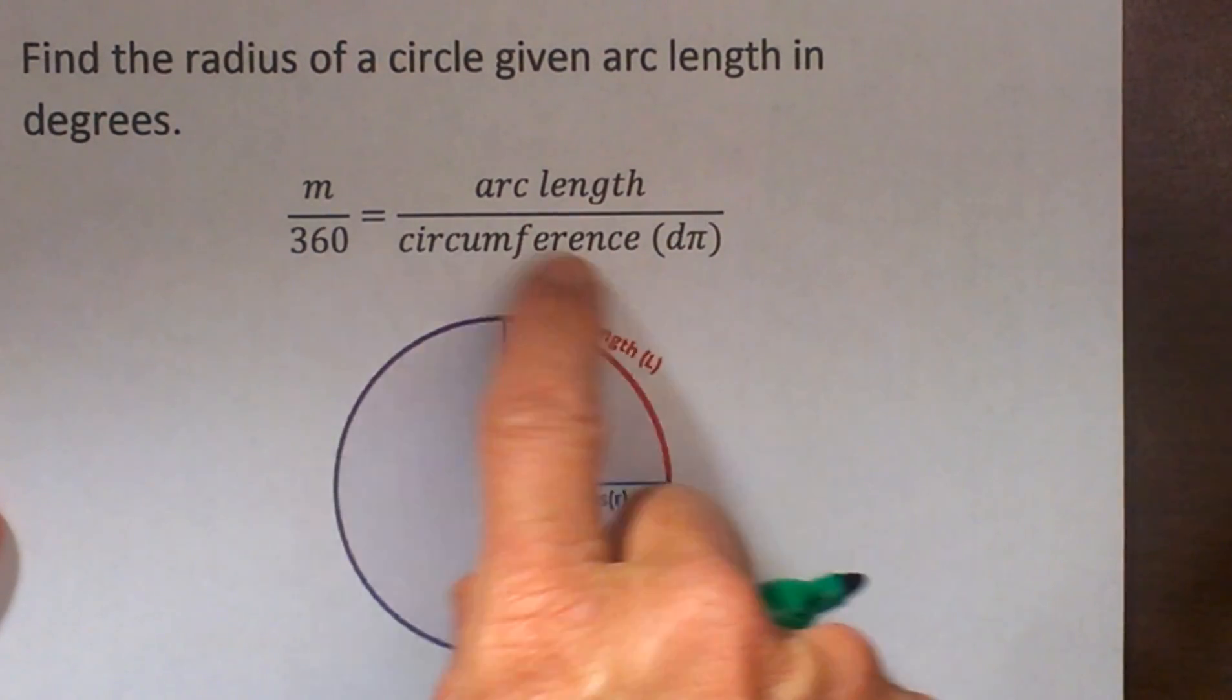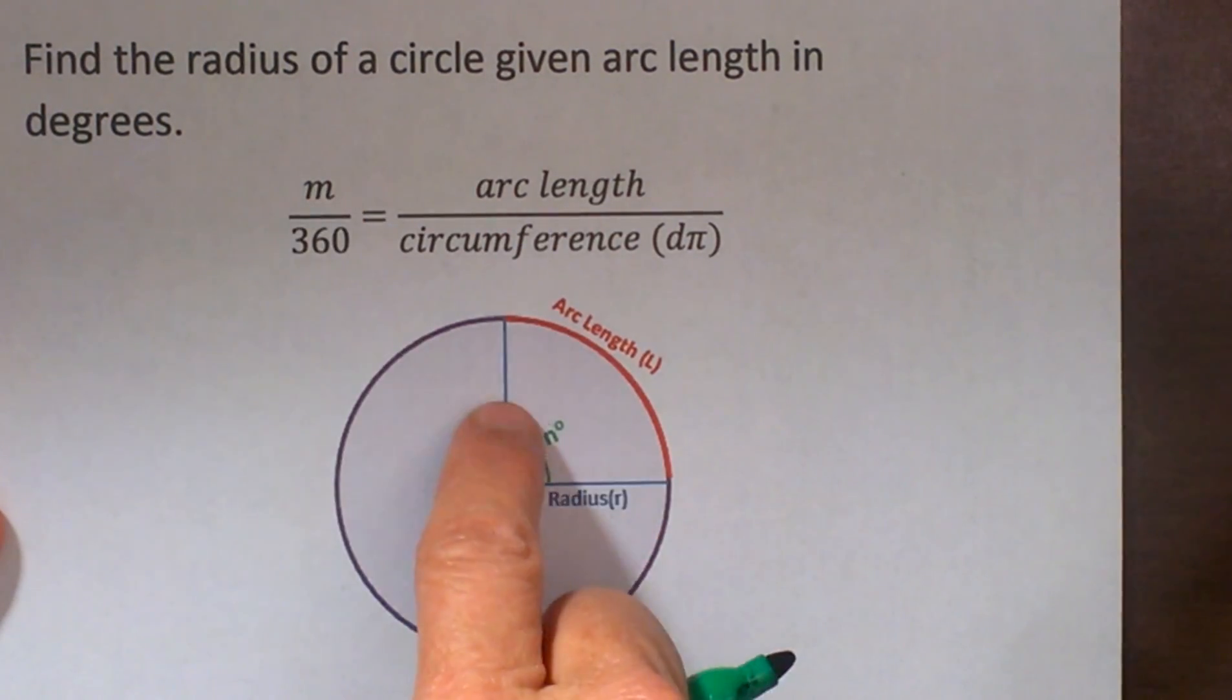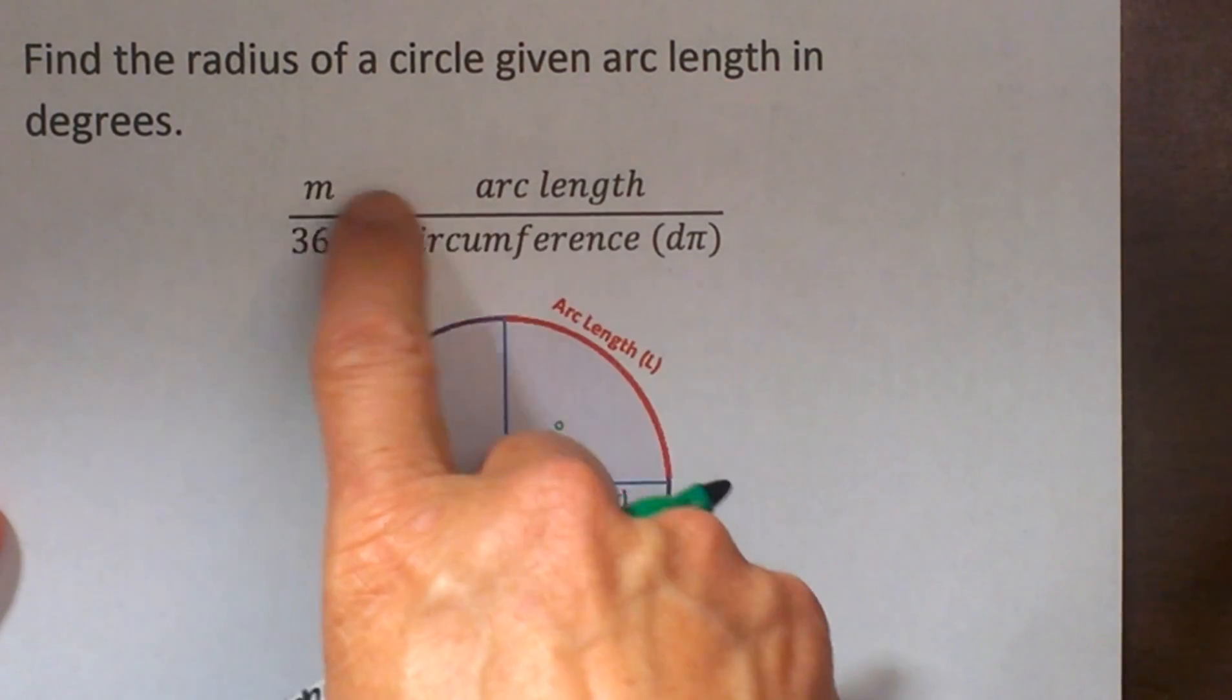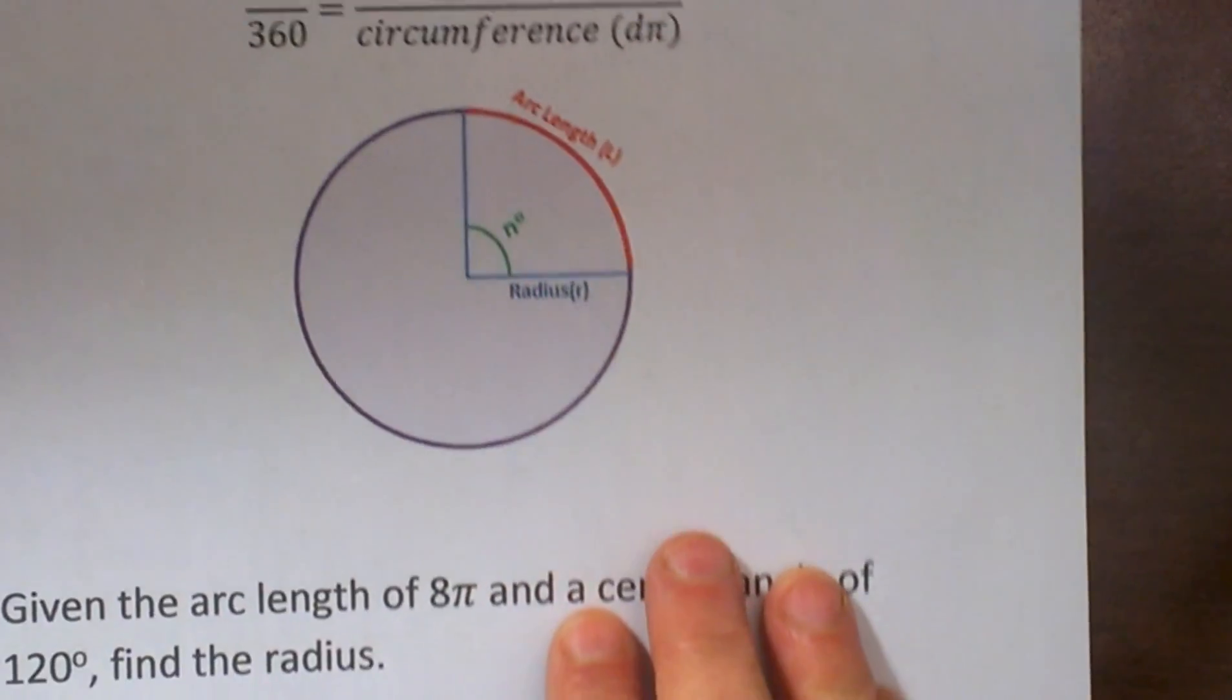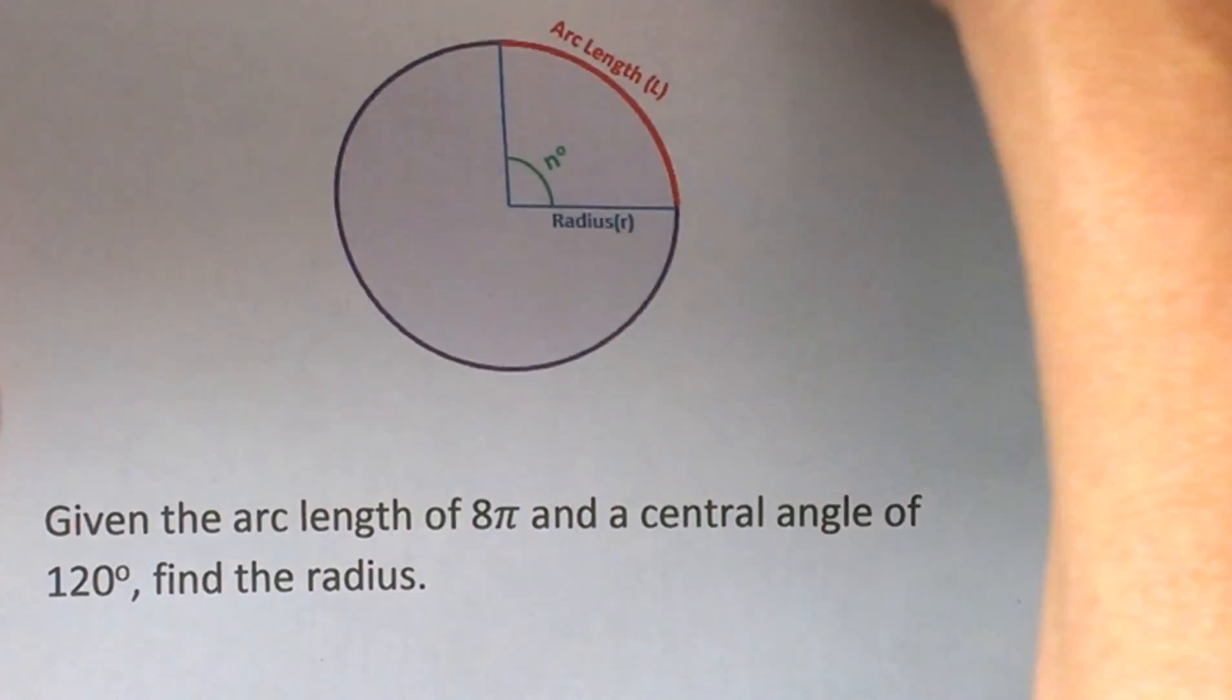So 360 is the entire circumference and this fraction of the arc, the measure of the arc, is equal to the fraction of the circumference. It kind of makes sense. So now let's look at this in practice.